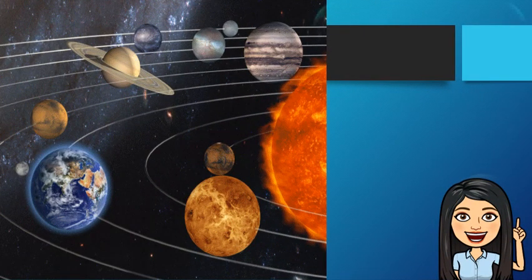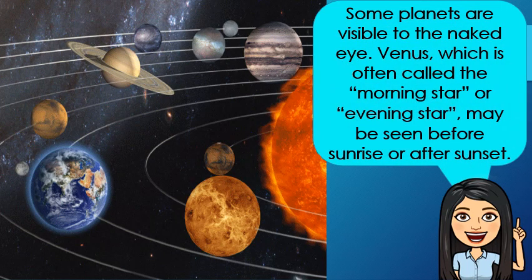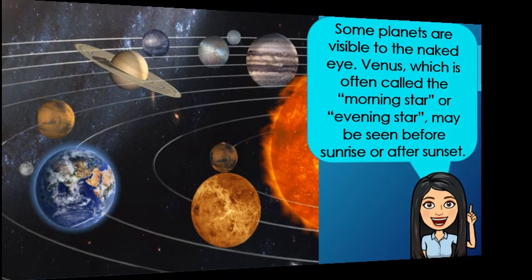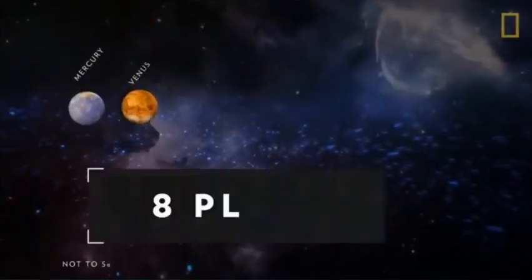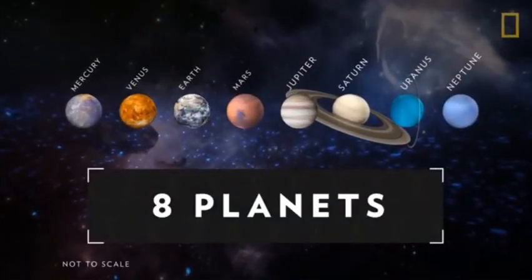Let's tackle the planets. Some planets are visible to the naked eye. Venus, which is often called the morning star or evening star, may be seen before sunrise or after sunset. This is Venus.